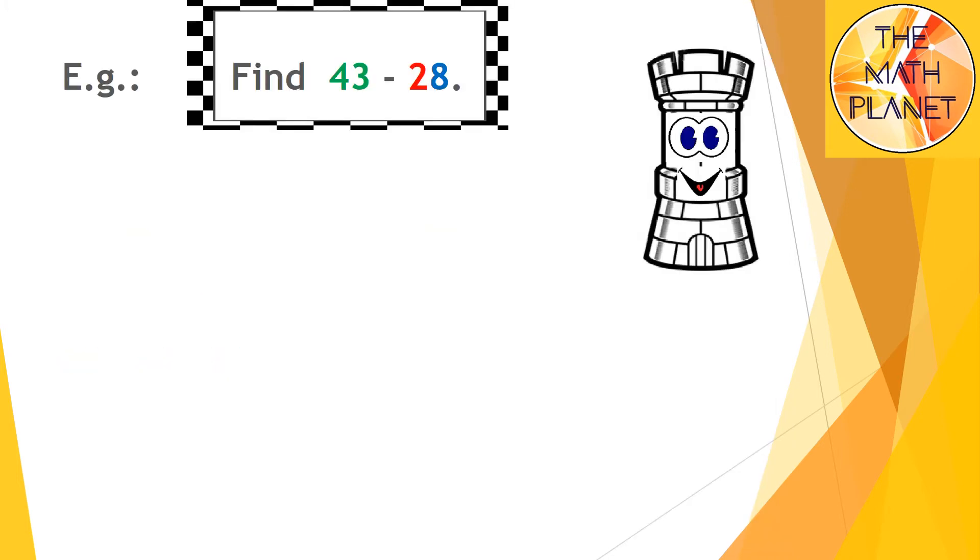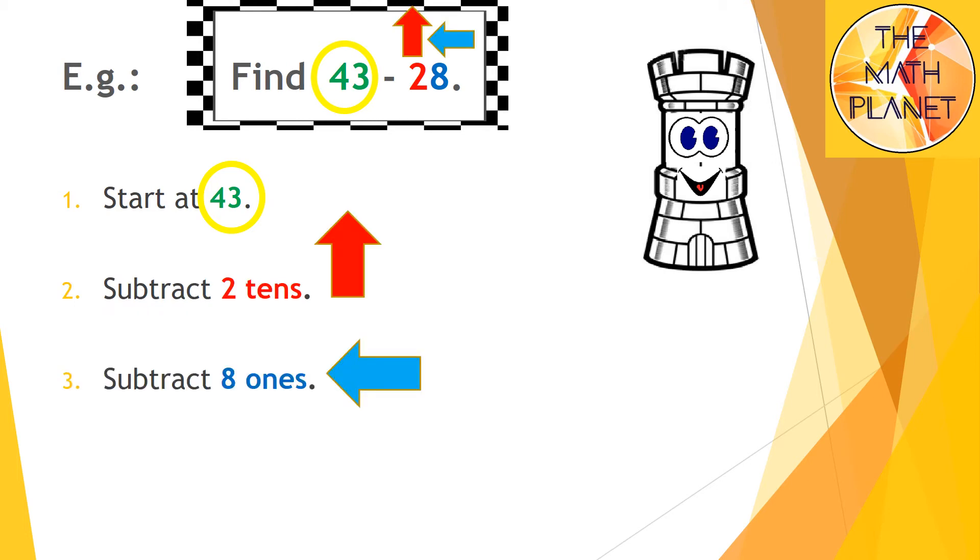Another example is 43 minus 28. My start point is 43, then I'll subtract 2 tens by moving up and then I'll subtract 8 ones by moving to the left, and the answer will be at the destination point.